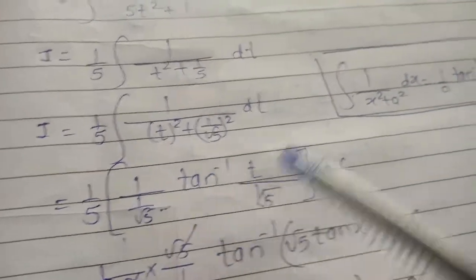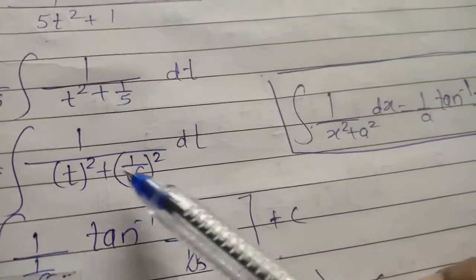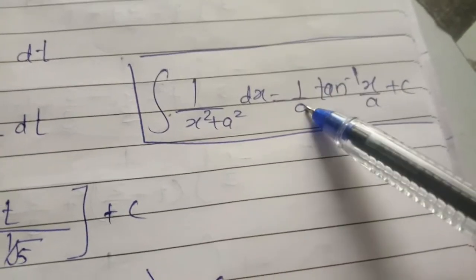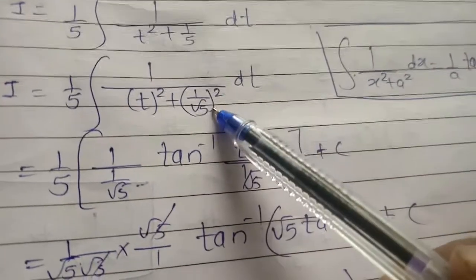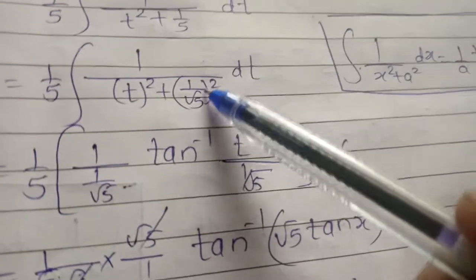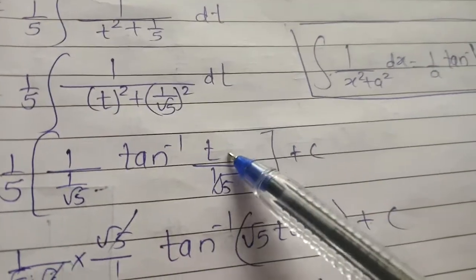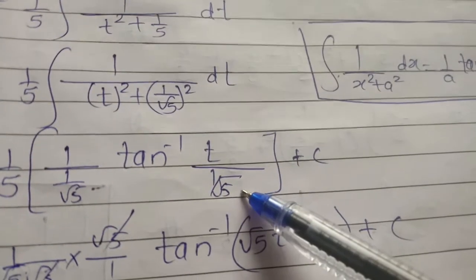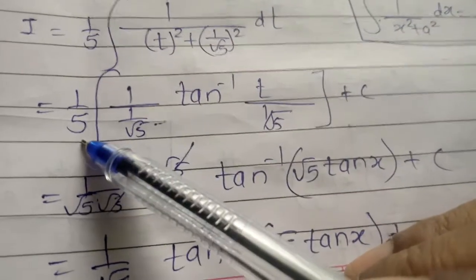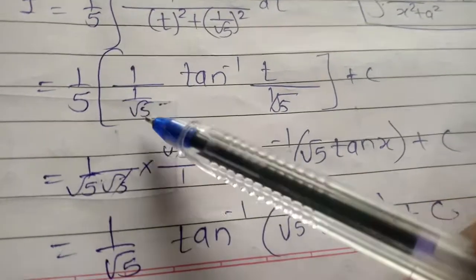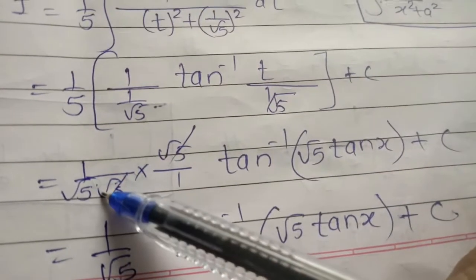Now we use the standard formula: integration of 1 upon (x square plus a square) equals 1 upon a times tan inverse (x upon a) plus c. Here a equals 1 upon root 5, so 1 upon a equals root 5. Applying the formula: 1 upon 5 times root 5 times tan inverse (t upon 1 upon root 5), which simplifies since root 5 into root 5 equals 5, and one root 5 cancels.